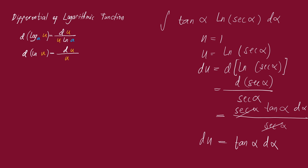Now we can apply the left side of the power formula: the integral of u = ln(sec α) raised to n = 1, times du = tan α dα. As you can see, this integral is exactly equal to the original function given. So you can immediately proceed applying the right side of the power formula: u raised to n plus one over n plus one.